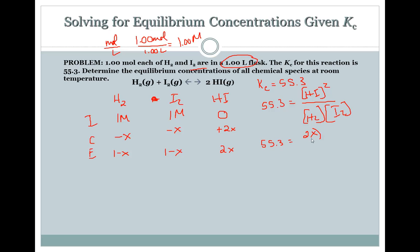The Kc of the reaction is 55.3. This one's gonna be a little bit more difficult. Determine the equilibrium concentrations. We don't have what any of them are at equilibrium, so we have to determine that for the chemical species at room temperature. Minus X here, minus X here, plus 2X here. So that means 1 minus X, 1 minus X, and then 2X.